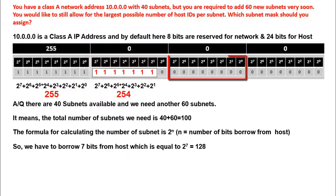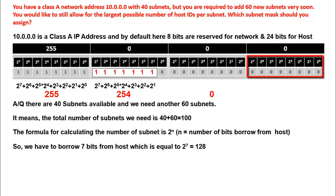In the third octet there are no network bits, so the answer is 0. Similarly, in the fourth octet there are no network bits, so the answer is also 0. Now, what is the subnet mask for this question?